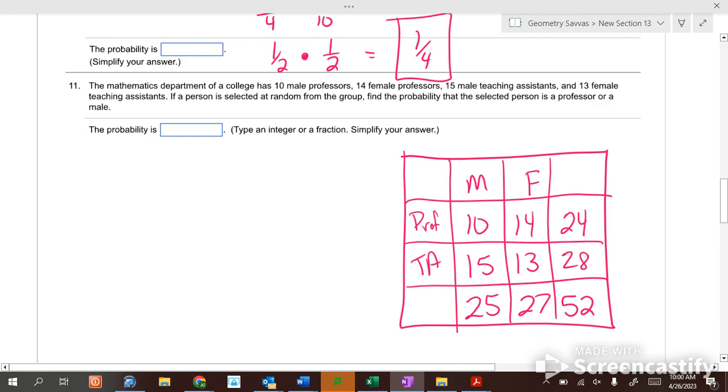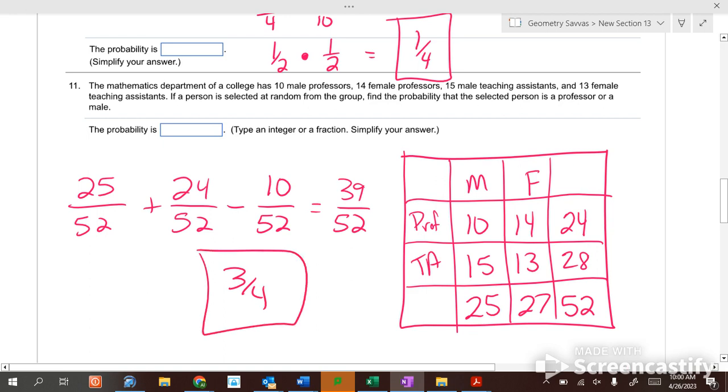How many males are there? Twenty-five out of fifty-two. How many professors are there? Twenty-four out of fifty-two. How many did we count twice? The male professors. Ten out of the fifty-two. So twenty-five plus twenty-four is forty-nine minus ten is thirty-nine out of fifty-two. Which reduces to be what? Three-fourths.